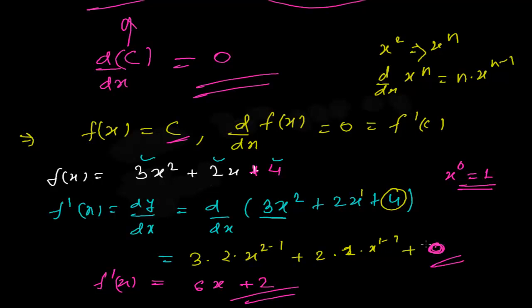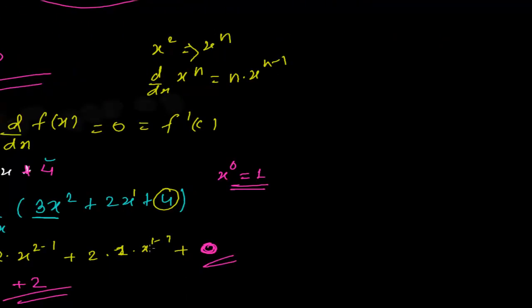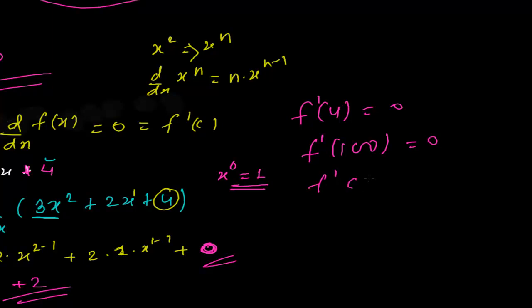So the derivative of any constant function is zero. For example, the derivative of 4 is 0, the derivative of 100 is 0 — the derivative of any constant term is always zero. In the next video we'll be learning more problems and concepts of derivatives. I'll be back, bye bye.